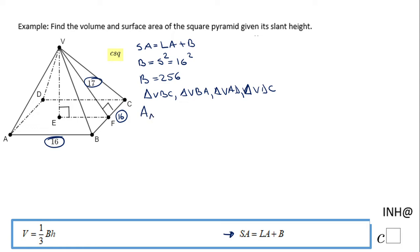For triangle VBC, the height is 17 and the base is 16. So we have 1/2 times the base times 17. Simplifying, the area of triangle VBC equals 8 times 17, which is 136 square units. The lateral area is 4 times 136, so the lateral area is 544.